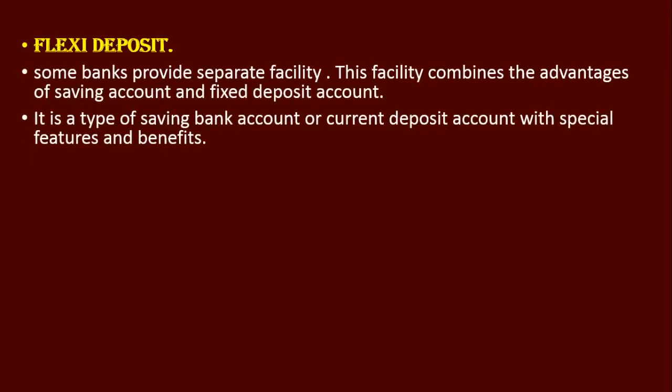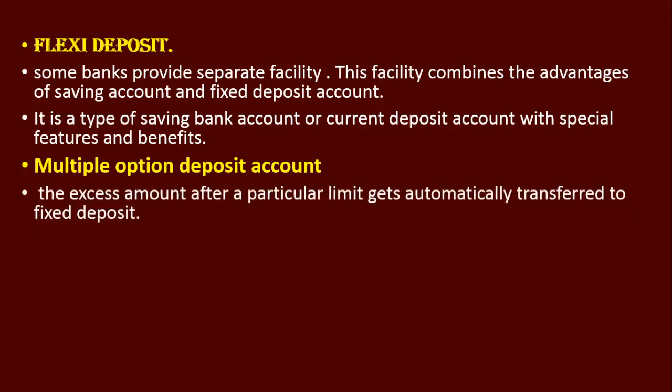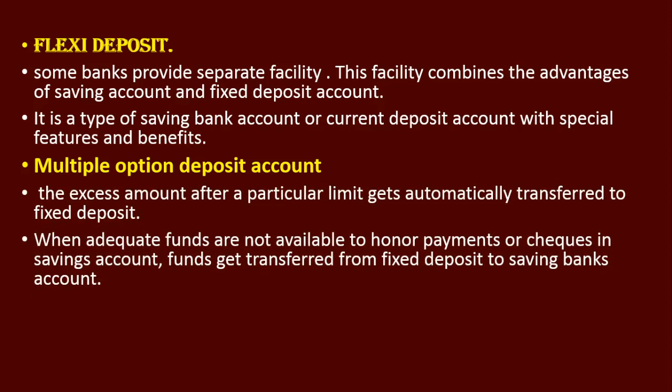Some banks also provide a flexible deposit facility, also known as multiple option deposit account, which combines the advantages of both savings account and fixed deposit account. The excess amount after a particular limit gets automatically transferred to a fixed deposit. When adequate funds are not available in the savings account to honor a payment or check, funds are automatically transferred from the fixed deposit back to the savings account to get that check honored.